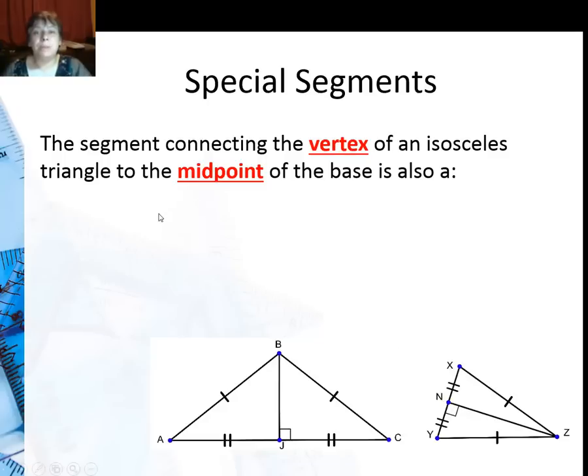Now looking at special segments for isosceles triangles, we're going to start with the vertex. So when we connect the vertex to the midpoint of the base, the segment is a median. One, because it's connected to the midpoint. Vertex to midpoint is a median.